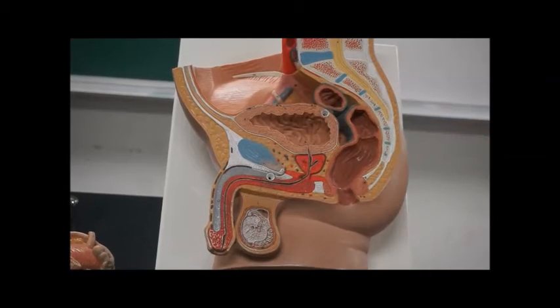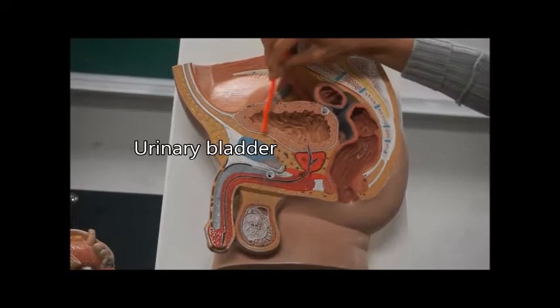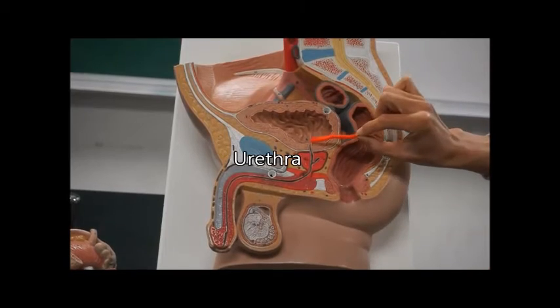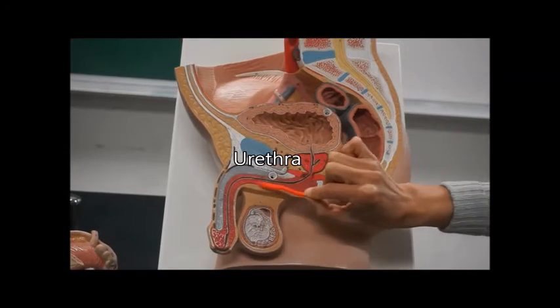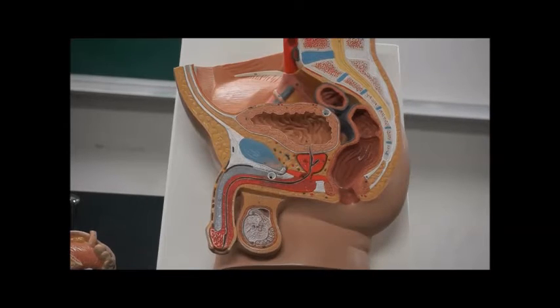This is the urinary bladder. Urine comes out of the urinary bladder via the urethra. The male's urethra is very long, so it has three sections.